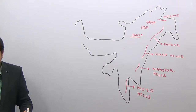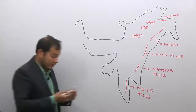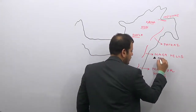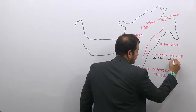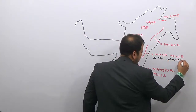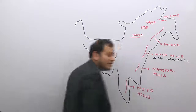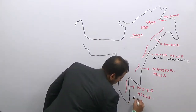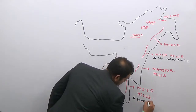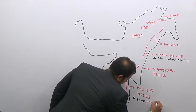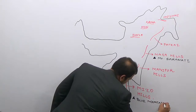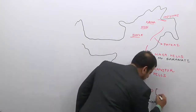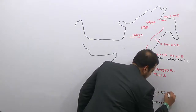What is the highest peak of the Naga hills? It is Mount Saramati, in the state of Nagaland. What is the highest peak of Mizo hills? It is Blue Mountain. And what is the other name of Mizo hills? It is Lushai hills.